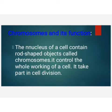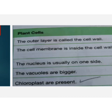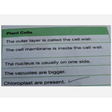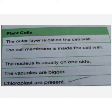After that, we have the plant cell and animal cell. In the plant cell, the outer layer is called the cell wall, and the cell membrane is inside the cell wall. The nucleus is on one side because of the large vacuole, and chloroplasts are present because they are used in the photosynthesis process.